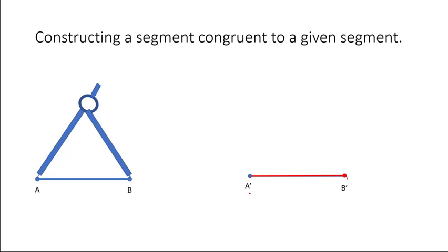So here we have a segment that is congruent to segment AB. We've labeled this as A prime B prime — A with an apostrophe and B with an apostrophe. We see that a lot in geometry. It indicates that A prime corresponds with A, and B prime corresponds with point B. That's how you create a segment congruent to another given segment.